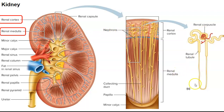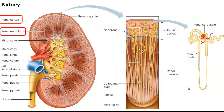Here's a single nephron right here. There are literally millions of them in your kidneys, and they're located both within the cortex and in the medulla. The medulla gets that striated appearance from these tubes. Urine is produced in these renal pyramids and then is deposited or released at things called minor calyces.